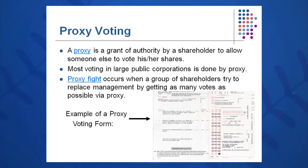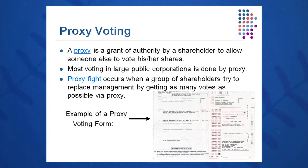Proxy voting is one way you can put on a proxy fight. If you're unhappy with management, you can send in your votes via proxy — it's basically like a Scantron, a granting of authority to allow someone else to vote your shares. For instance, I send my proxy votes into National Financial Services Company, a branch of Fidelity Investments, and they vote my shares for me. These days, you can go to proxyvote.com, enter your secret code, and vote your shares right online.